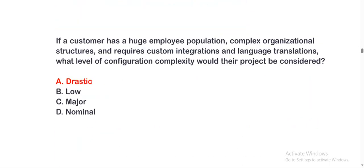Next question: If a customer has a huge employee population, complex organizational structure, and requires custom integration and language translations, what level of configuration complexity would their project be considered? The options are: option A, drastic; option B, low; option C, major; option D, nominal. The correct option is option A.